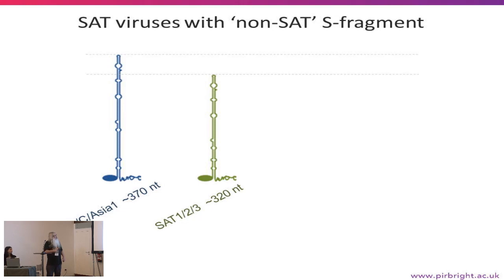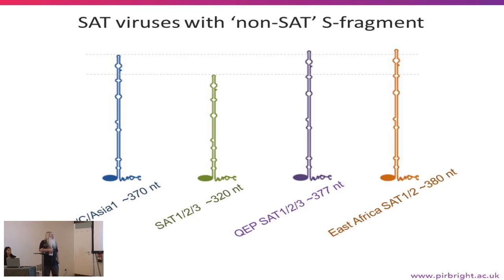These two are phylogenetically not really related — the sequence differences are extremely large between them. But if we look at other places in Africa that we've sequenced, for example in the Queen Elizabeth National Park in southwest Uganda, and also in various places in East Africa, we see a longer S fragment, much more like the O/A/C. Again, these are generally not phylogenetically related.